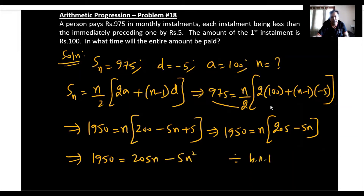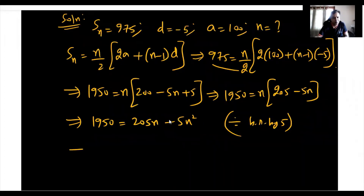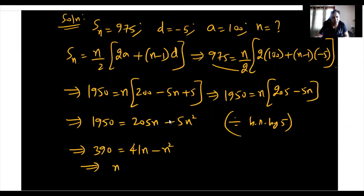Divide both sides by 5. We get n squared minus 41n plus 390 equals zero. This is a quadratic equation.